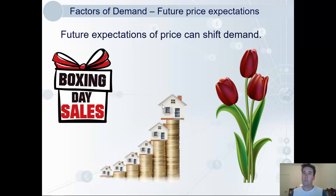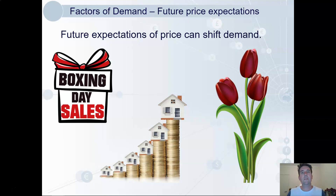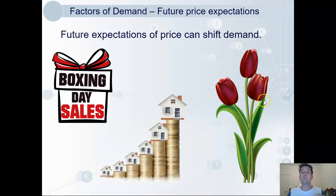We learned that price does not shift demand; however, our expectations of price do. If you know all the stuff you want is about to go on sale, you would wait. We see the opposite with house prices in Australia — we've expected them to keep rising, making people want to buy before prices go up. A famous example is tulip mania in the Netherlands in the 17th century: as prices kept rising, people kept buying hoping to on-sell at a profit, and prices skyrocketed past ten times the salary of a skilled worker.